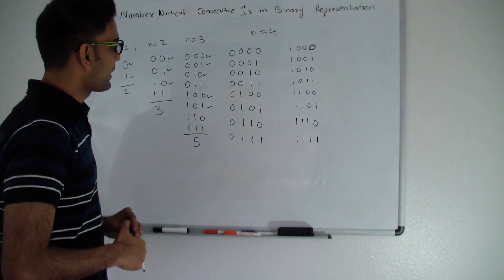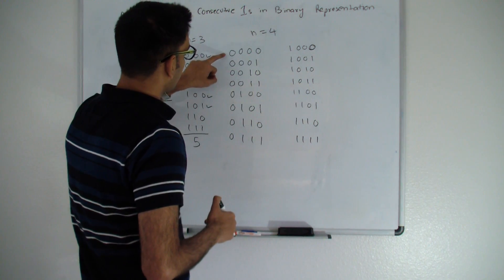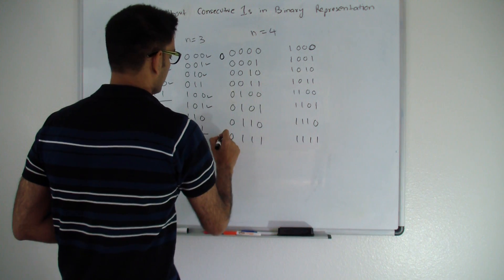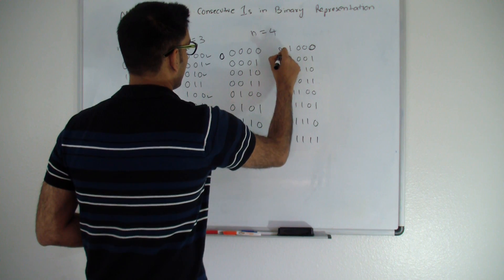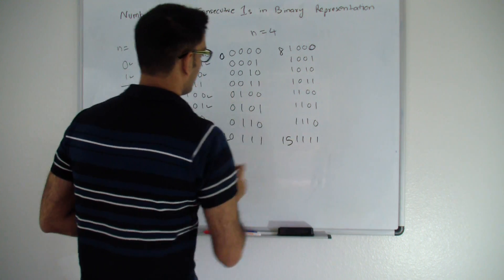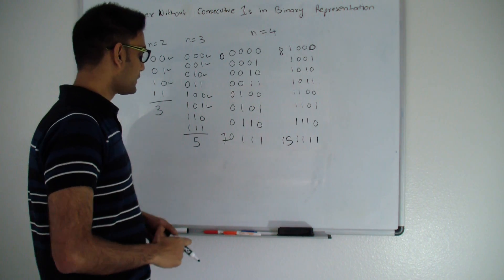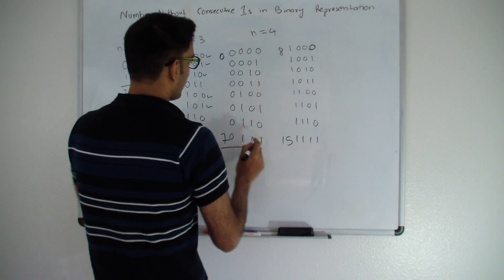Here I have a binary representation for 4-bit numbers. This goes from 0 to 15. So this is 0 to 7 and this is 8 to 15. So let's see how it's a Fibonacci series. Let's look at this half.